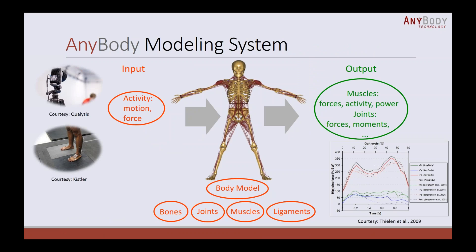This slide explains the principle of AnyBody briefly. AnyBody performs an inverse dynamic simulation, which means it requires motion and external forces as input. Of course, AnyBody users also have an option to predict ground reaction forces. Using muscle recruitment optimization with various options of objective functions, AnyBody calculates all internal musculoskeletal values such as muscle forces, muscle activations, joint reaction forces, and so on.